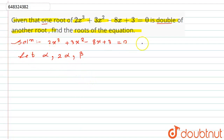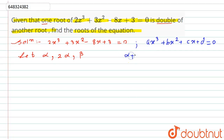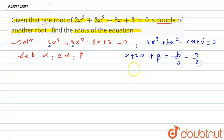We compare this equation with the general equation ax³ + bx² + cx + d = 0. The sum of roots is α + 2α + β = -b/a. On comparing, b = 3 and a = 2, so this equals -3/2. Therefore 3α + β = -3/2. Let this be equation number 1.